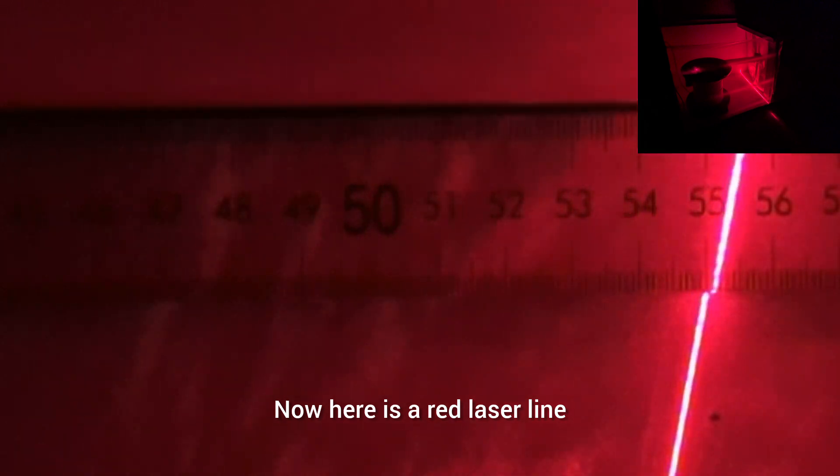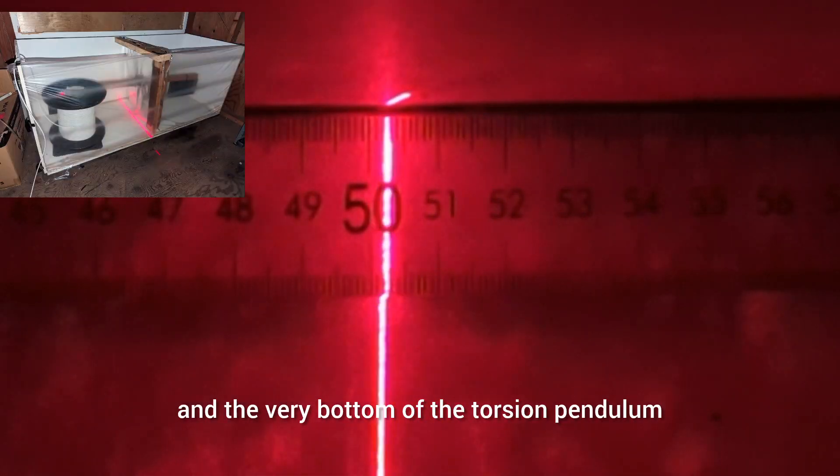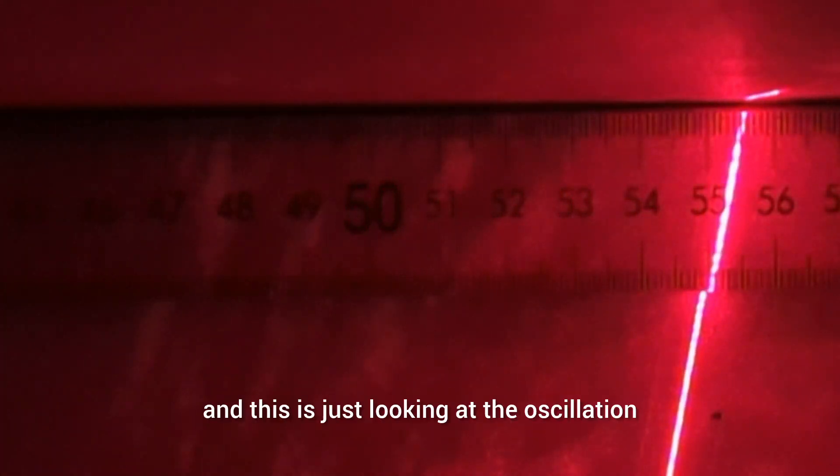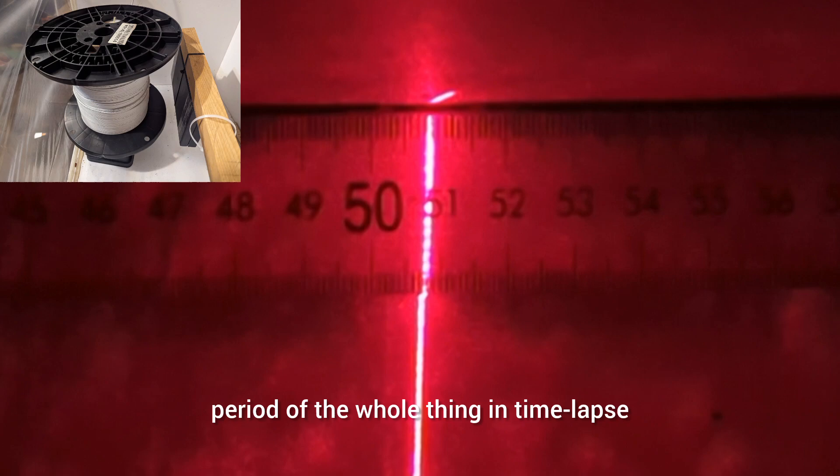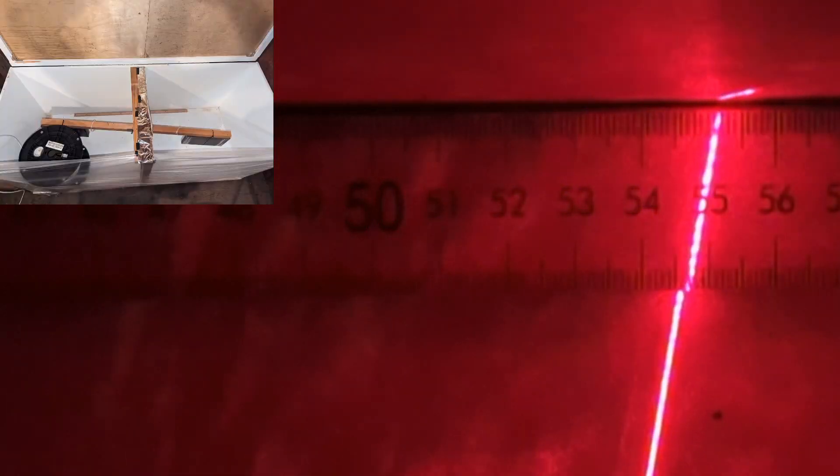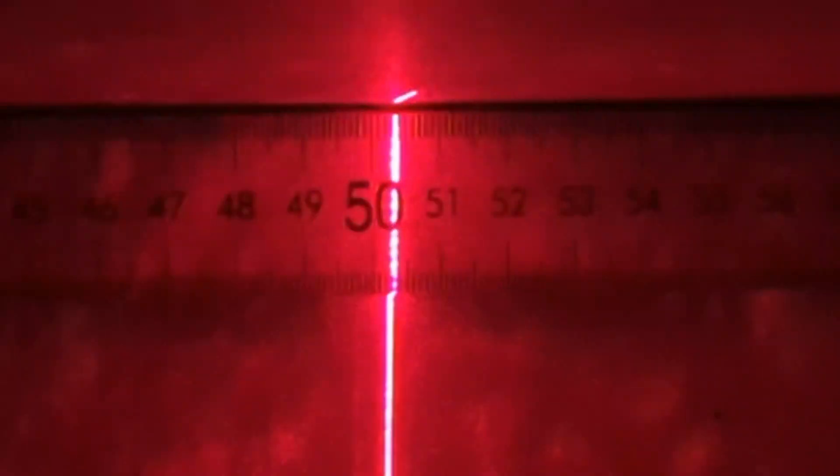Now here is a red laser line that's attached to the center and the very bottom of the torsion pendulum and this is just looking at the oscillation period of the whole thing in time-lapse. So it swings from about 55 to 50 centimeters.